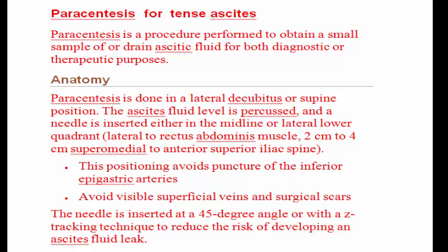Paracentesis is done in a lateral decubitus or supine position. The ascites fluid level is percussed, and a needle is inserted either in the midline or lateral lower quadrant, lateral to the rectus abdominis muscle, 2 cm to 4 cm superomedial to the anterior superior iliac spine. This positioning avoids puncture of the inferior epigastric arteries, visible superficial veins, and surgical scars.